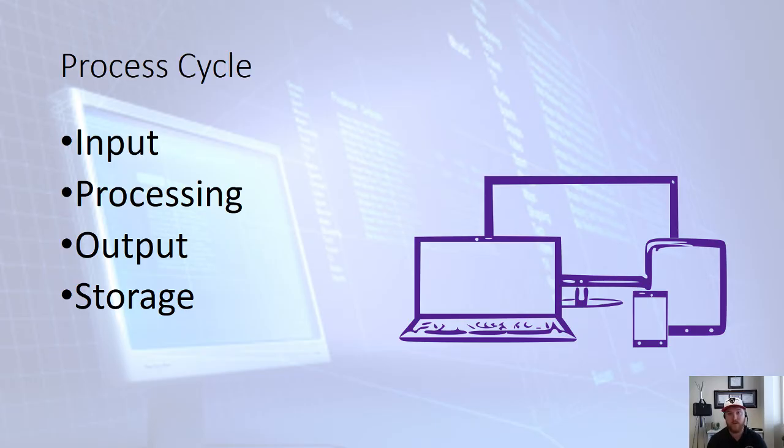And then finally the output—that's the actual change that it makes based off of the input and processing. So the change being when it displays the letter that you type on your keyboard or the word that you type out.